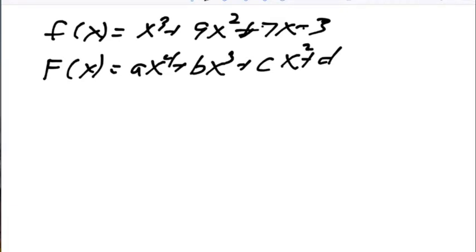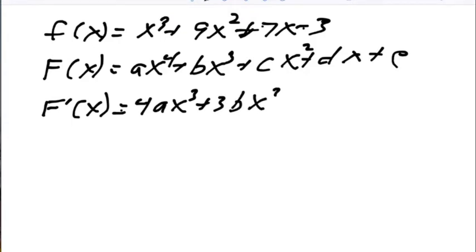just some fourth degree polynomial. I can compute capital F prime of x and get 4ax cubed plus 3bx squared plus 2cx plus d. And for these two things to be equal, what I need is that little f of x and capital F prime of x are the same thing. So for that to be true,